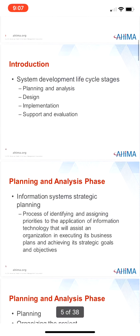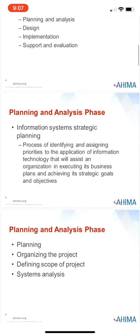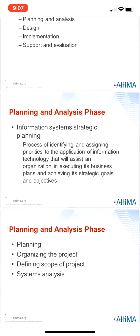Talking about planning and analysis on page 44: this is the process of identifying and assigning priorities to the application of information technology that will assist an organization in executing its business plans and achieving its strategic goals and objectives. You want to choose a system that is going to meet your business objectives — for example, if your desire is to increase the quality of patient care, you'd want to make sure whatever system you chose helped achieve that goal.